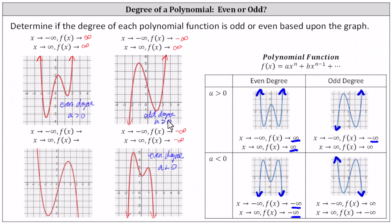And finally, for the last graph, for the left-hand behavior, as x approaches negative infinity, f of x approaches positive infinity. And for the right-hand behavior, as x approaches positive infinity, f of x approaches negative infinity. This indicates the polynomial has an odd degree, and the leading coefficient a is negative.